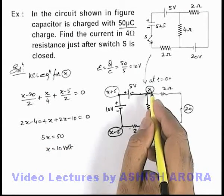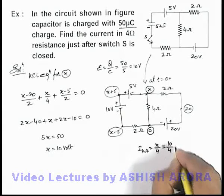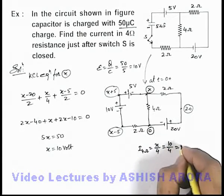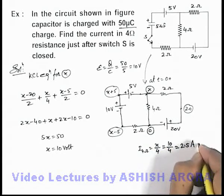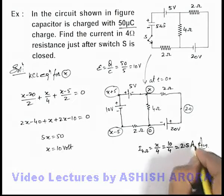So we have got the value of x equal to 10, you can put it over here. So we are getting the current in 4 ohm resistance to be 2.5 ampere. That'll be the answer to this problem.